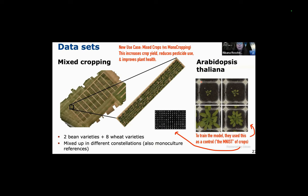They applied this GAN to a field of mixed crops. In agriculture, mixed cropping has a lot of benefits: it increases crop yield, reduces pesticide use, and improves plant health. They took a field with two bean varieties and eight wheat varieties, so a lot of diversity. As a control, they used a plant called Arabidopsis thaliana, which they described as sort of the MNIST of crops. If you know MNIST, it's one of the earliest machine learning datasets — they used handwriting samples from students writing out digits and trained a network to identify what numbers were being handwritten.